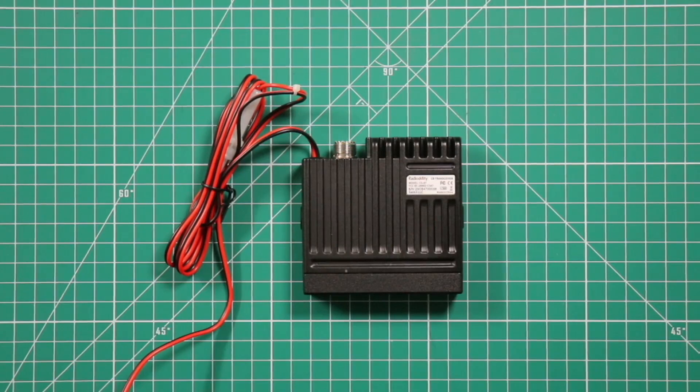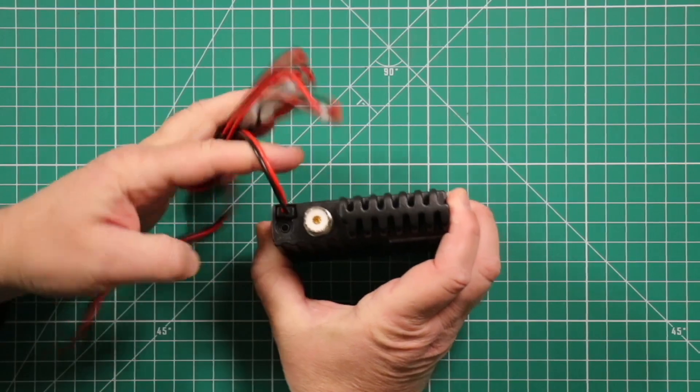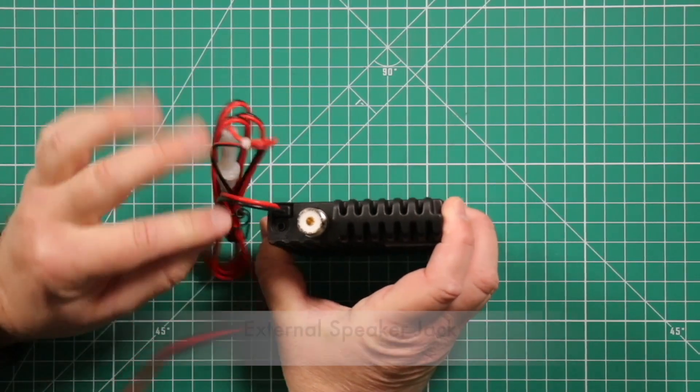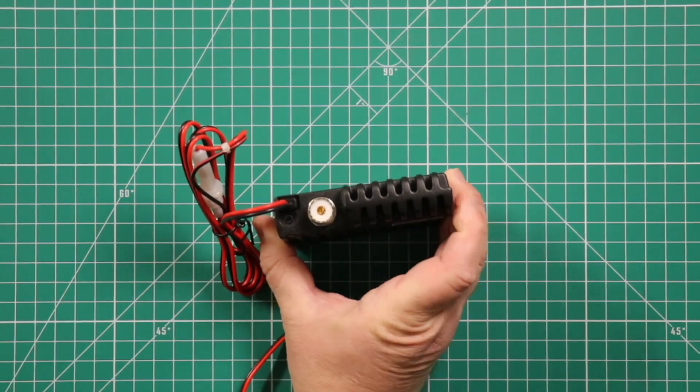Take a look at the radio. You've got the main body here. Not much to tell except on the back you have your power cord which is permanently attached, a speaker input, an SO239 for your antenna, and a heatsink on the back.